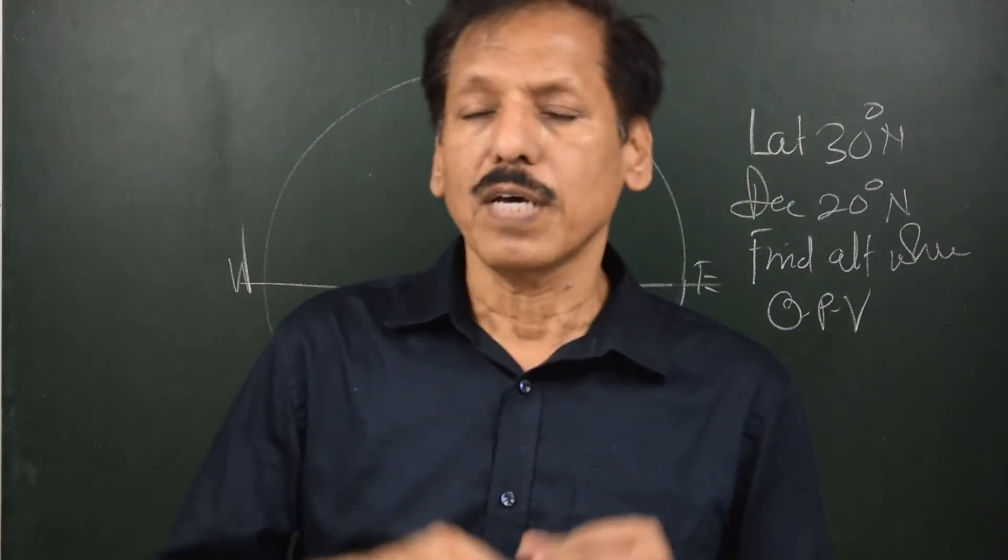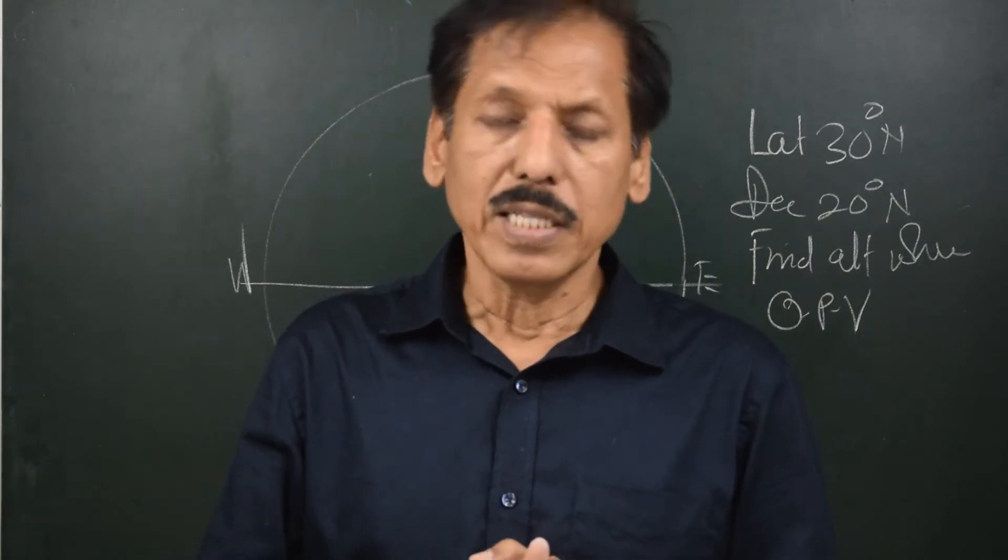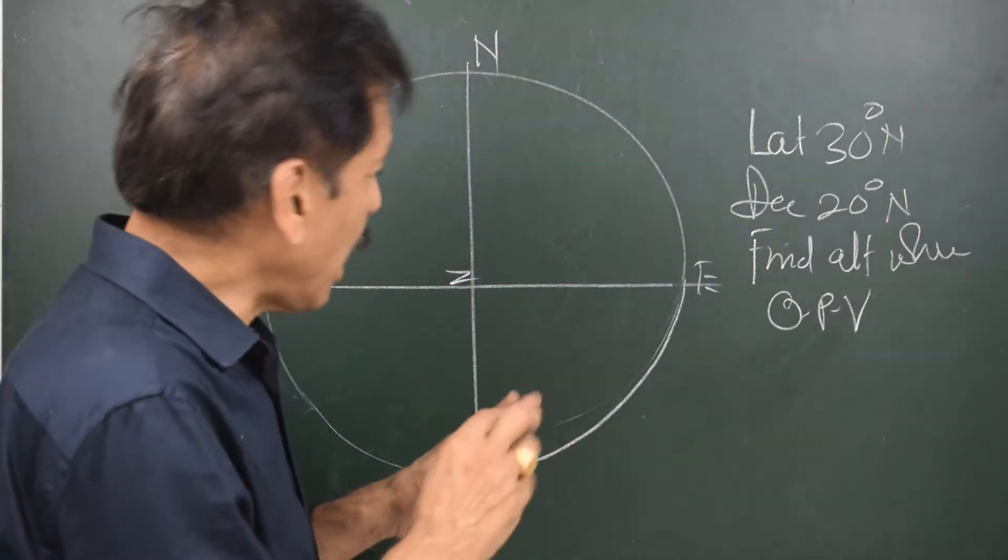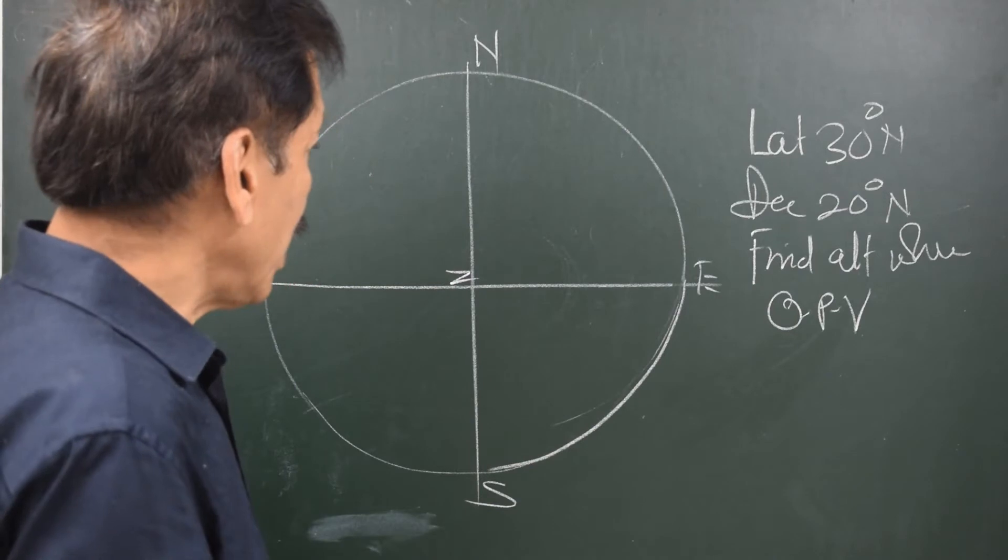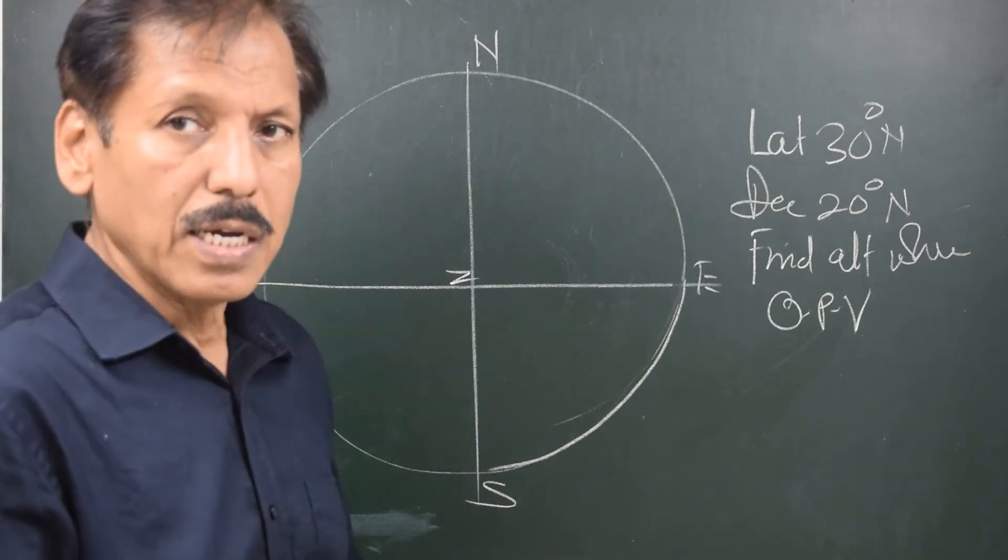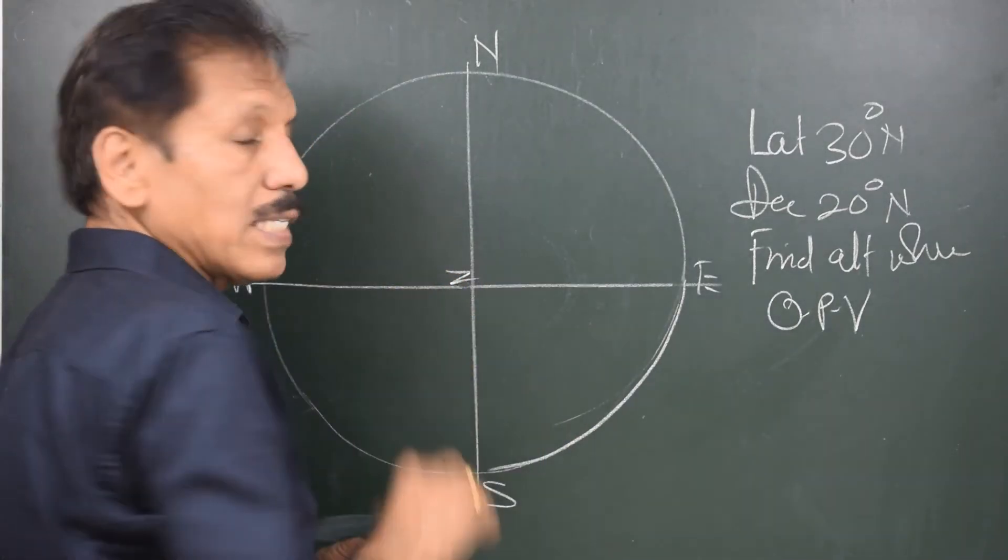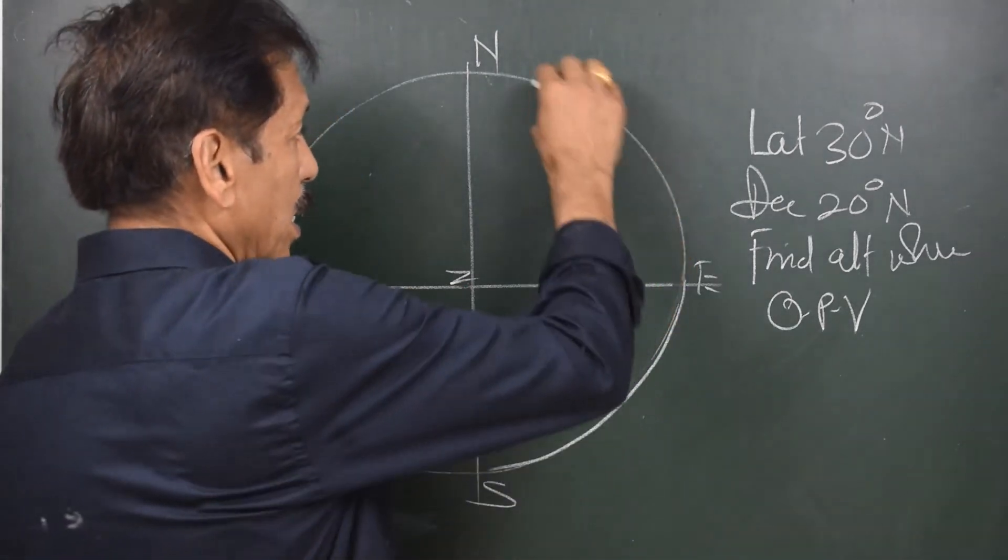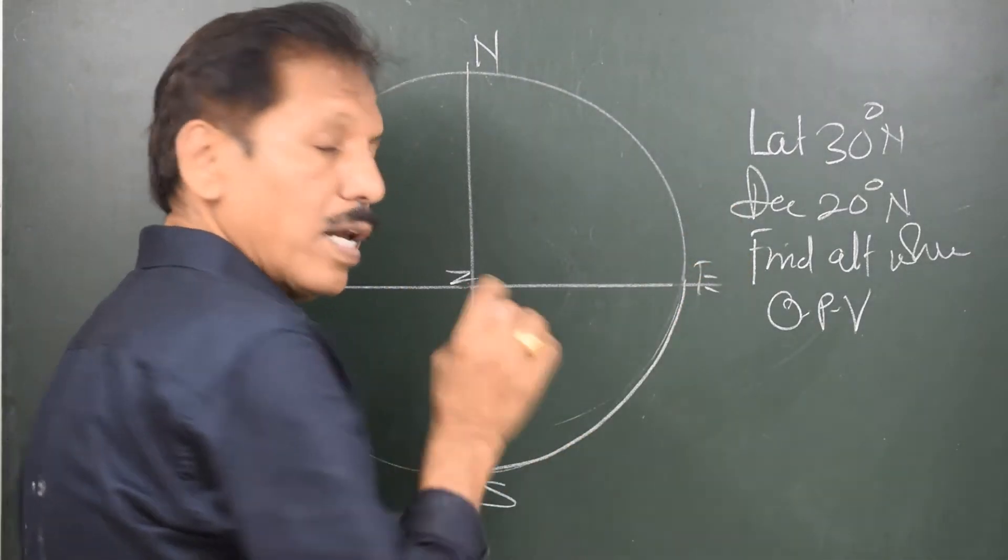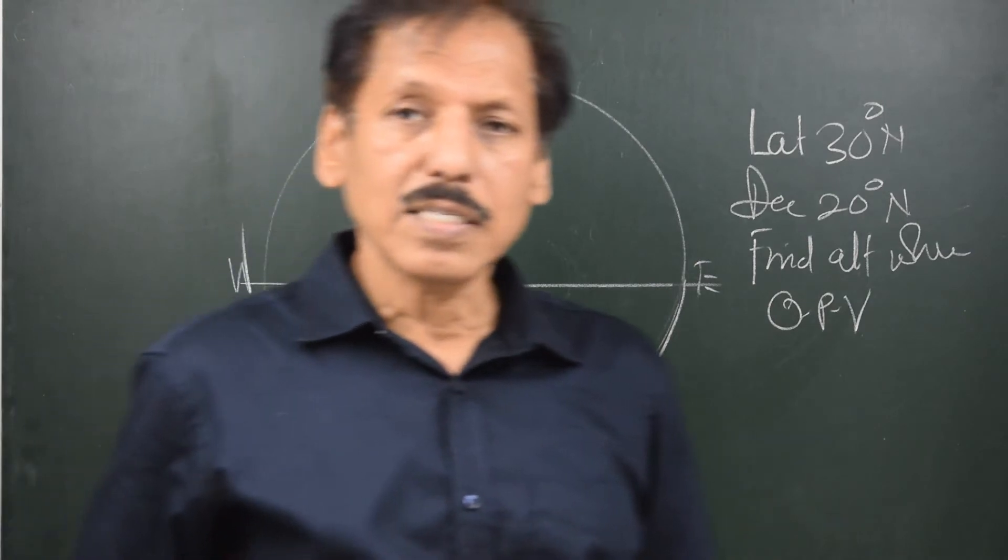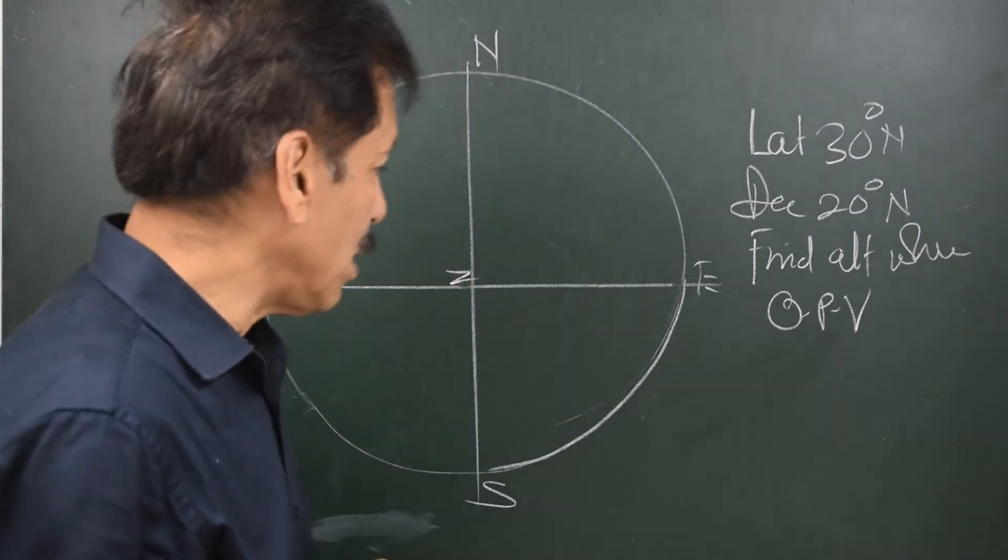From that centre of the earth, we are looking at everything in the universe. But to understand this calculation, let us assume that what we have drawn is not a circle, it is like a dome with Z as the highest point and the entire observer's rational horizon line as ground zero, level zero.